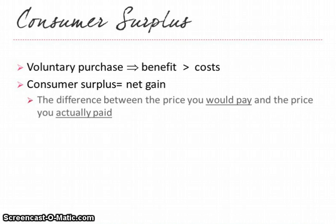Consumer surplus is actually the difference between the maximum price you'd be willing to pay for a product and the price that you actually did have to pay — the actual market price. Quite often when you purchase something, you would be willing to pay more than you actually had to pay. If you're actually making the purchase, you're either willing to pay the exact amount or more, and in that case you would have some consumer surplus.